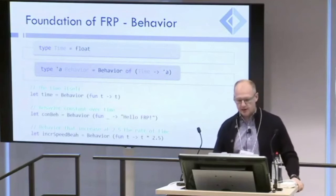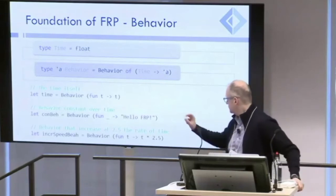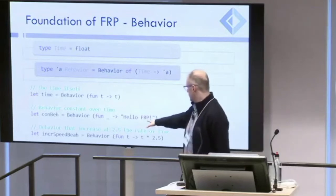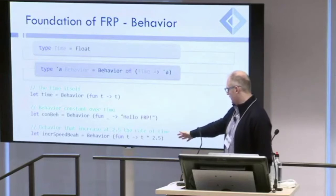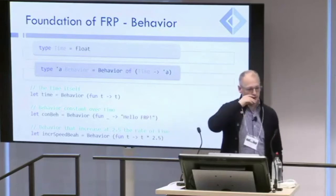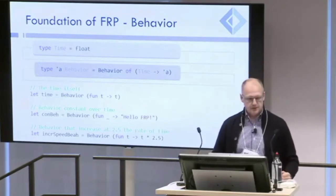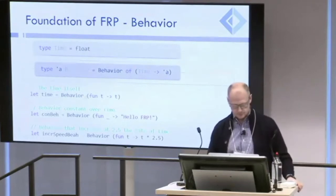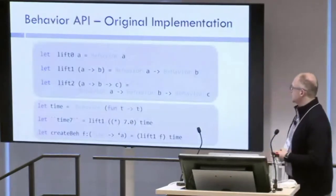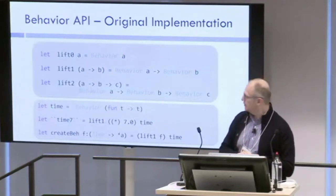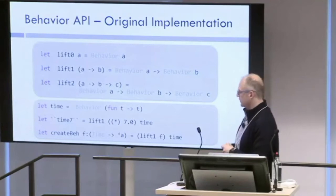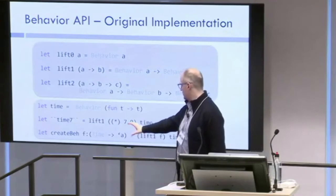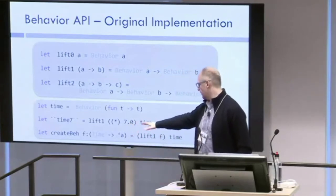With this simple data type we can already define a few behaviors: the behavior of time, which is the identity function; a constant behavior that always returns the same value; and a behavior that increases time by 2.5 — like increasing speed — which lets us define the speed of an object through a function. The API from the first paper includes the lift function, which just takes a value and lifts it into the behavior world. We can lift one value, two values, and so on, and rewrite behaviors using lift.